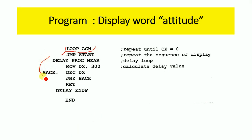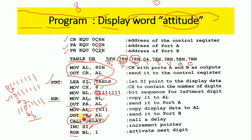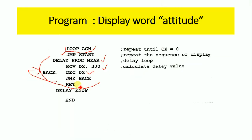The delay subroutine is a NEAR procedure. It loads DX with 300H, then decrements DX by one, giving 2FFH. A 'JNZ BACK' instruction repeats the decrement loop while DX is not zero. This creates a delay so each character remains visible on the display for a period of time before moving to the next one.